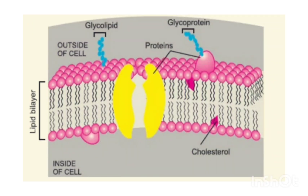Welcome to Science3 channel. Today we will talk about cell membrane. Cell membrane is present in prokaryotic and eukaryotic cells. It's thin, it's elastic, and it's covering the cytoplasm.